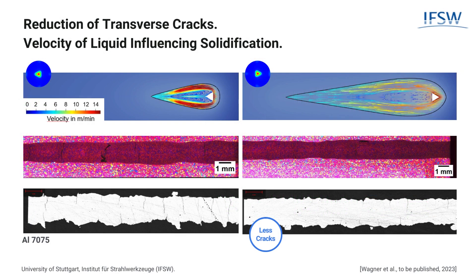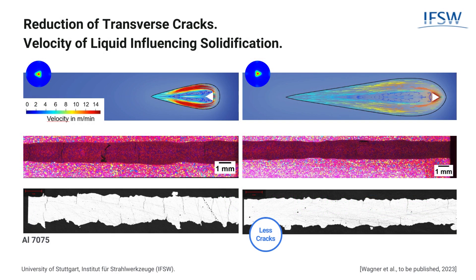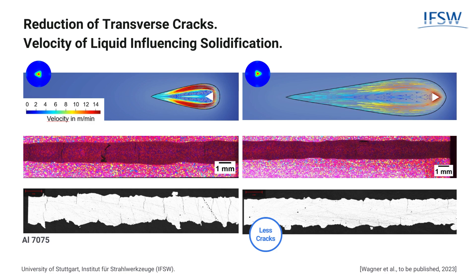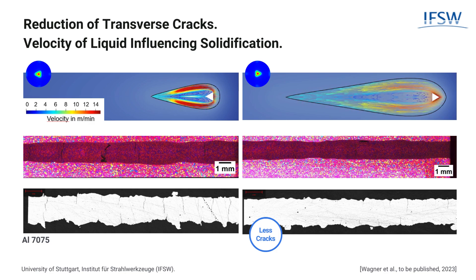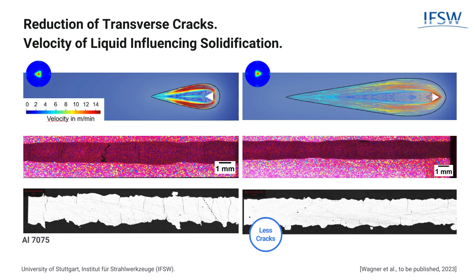The ability to adjust a beam shape in a short time allows to optimize the process for each application. Research shows the influence of beam shapes, such as in this example, where using the same beam shape in different orientations completely changes the process.